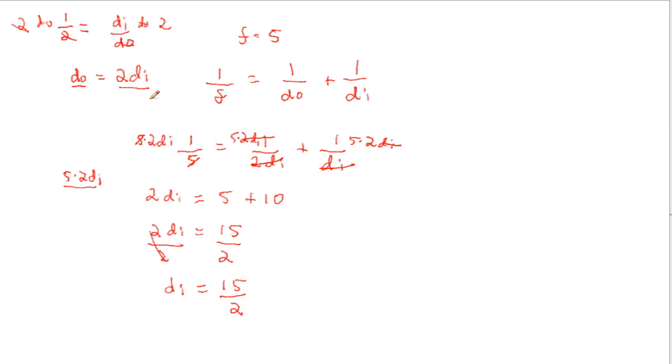But the question is asking us to determine the distance of the object. And we have the identity right there. So we have do, distance of the object is equal to 2 times the distance of the image. We'll substitute the di as 15 over 2. 15 divided by 2. And the 2's cancel out.